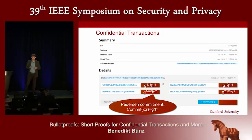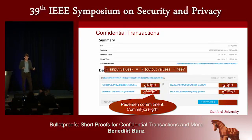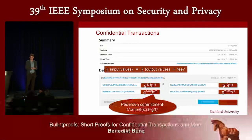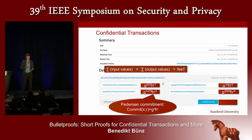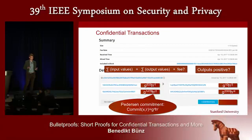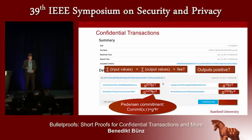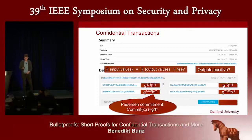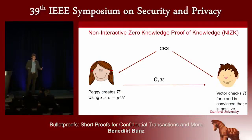The problem is if the transaction now has committed values — the amounts are hidden — how do you check that the inputs are equal to the outputs plus the fees? Additionally, there's a second condition: you have to check that all of the outputs are positive, that not one output is negative and another is much larger. This turns out to be the more difficult condition to check. Cryptography comes to the rescue with a non-interactive zero-knowledge proof of knowledge.